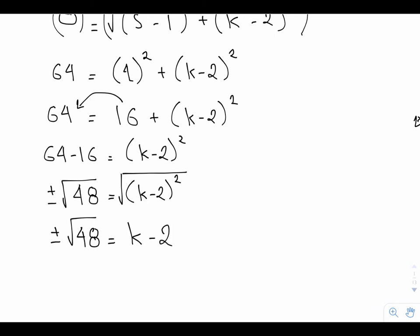So I take the square root of k minus 2 squared, and what I'm left with is plus or minus the square root of 48 equals k minus 2. If I bring that 2 over to this side, it makes it positive. I will have 2 plus or minus the square root of 48, and that equals my k value.